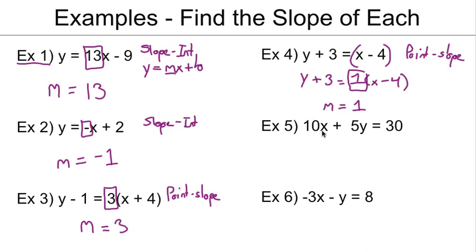Now in example 5 is where things get a little bit more interesting, because here I have x and y on the same side of the equation, which tells me that this is standard form. And when I have standard form, my slope is going to be the opposite of a over b. So I have to identify a and b.